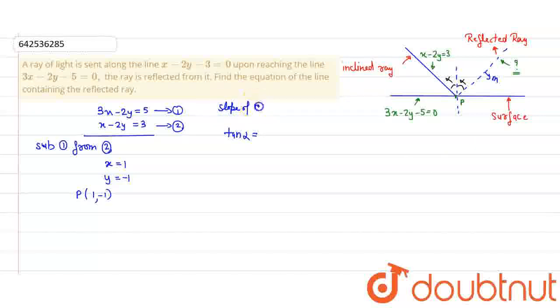Slope of normal, that is this one. This is the normal. This line is the normal. Slope of normal is minus 2 by 3.